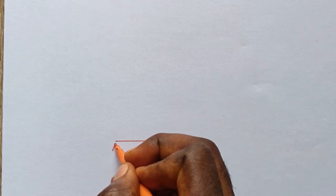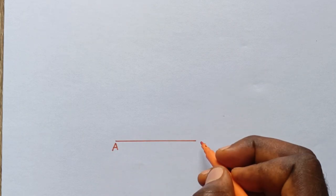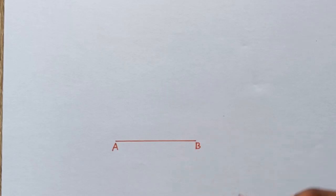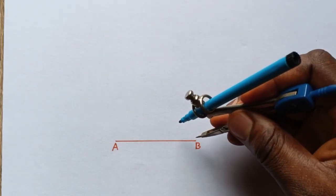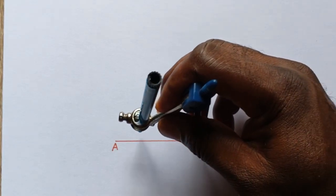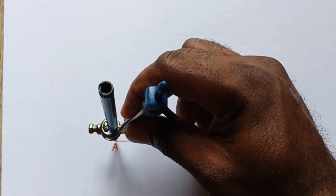Now label this point A and here is your point B. To construct an equilateral triangle of 6 centimeters, you open your pair of compasses at this point and expand it to point A.